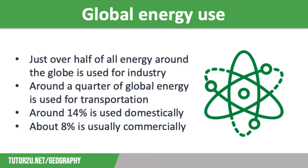We're going to start off with some stats about global energy use. Just over half of all energy around the globe is used for industry, manufacturing and food production. Around a quarter of global energy is used for transportation. Air travel in particular has seen huge growth in recent decades, but as countries have developed, so has car use. Around 14% is used domestically — in homes — including heating, lighting and cooling systems, as well as running electrical appliances. And about 8% is used commercially in retail, offices and hospitality.